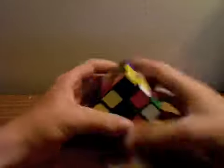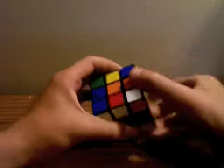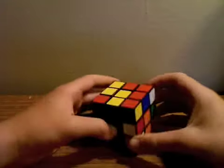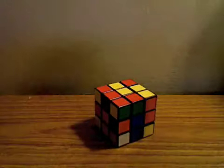You would just keep doing that with all the centers. Orange, orange, turn twice. Blue, blue, line it up, turn twice. And then the cross is done. That is the end of step one.